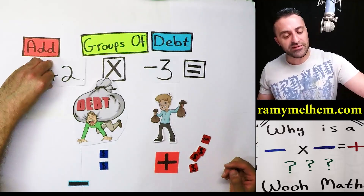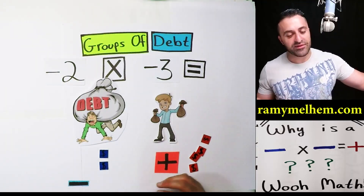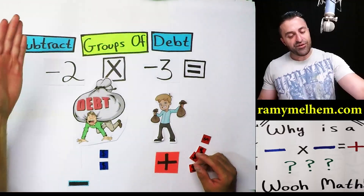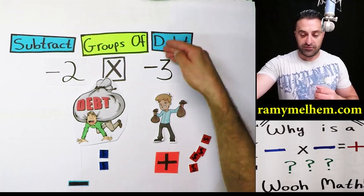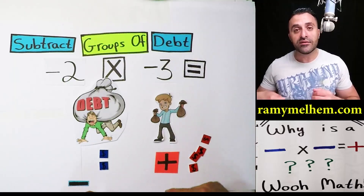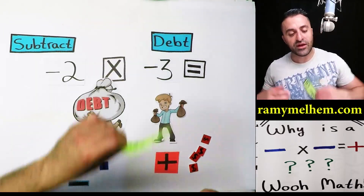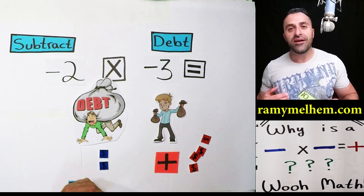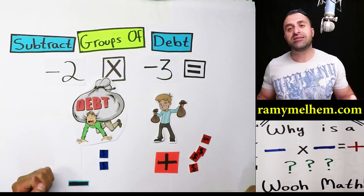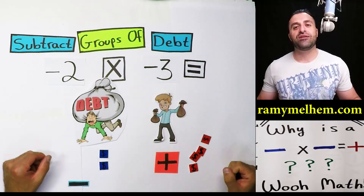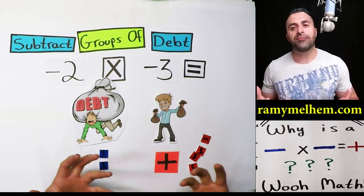What's the opposite of adding debt? You could subtract debt — and that's where the double negative kicks in. Because if you subtract two groups of negative three, which is the debt, you subtract debt. Go up to this debt guy and subtract his debt. He's going to feel awesome.